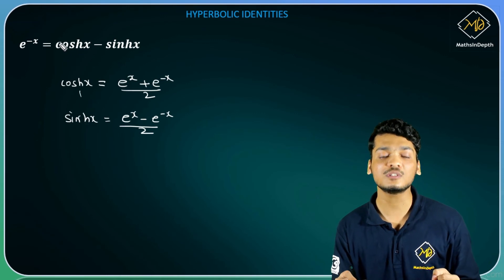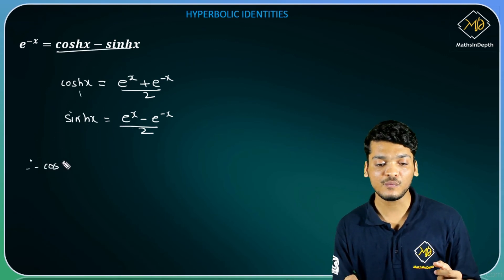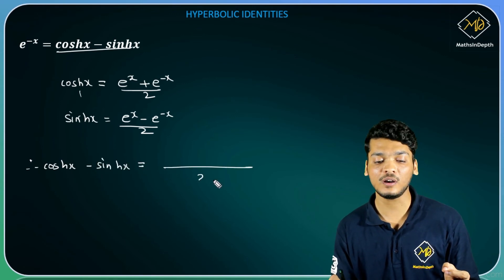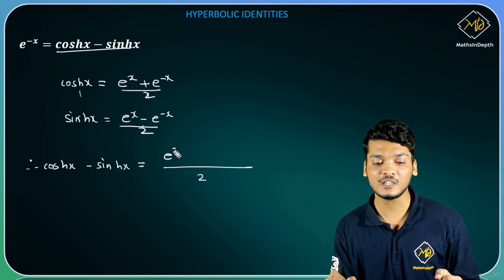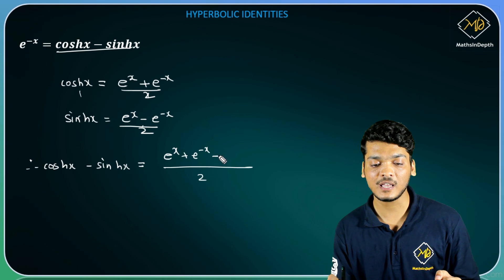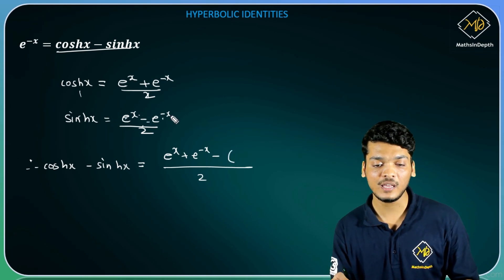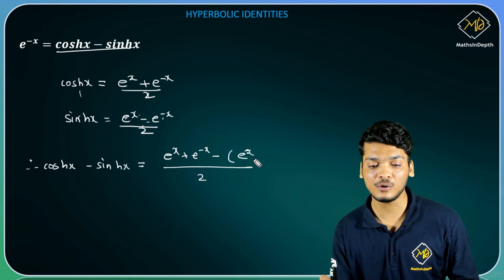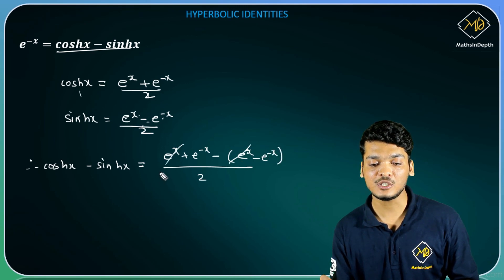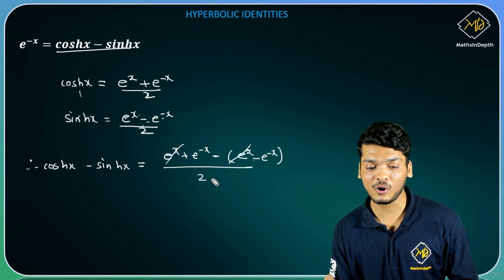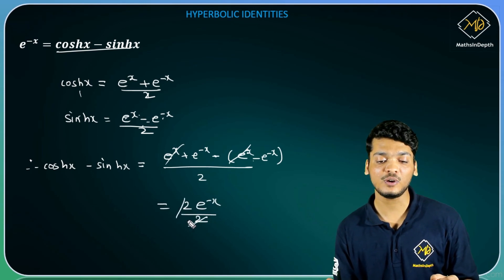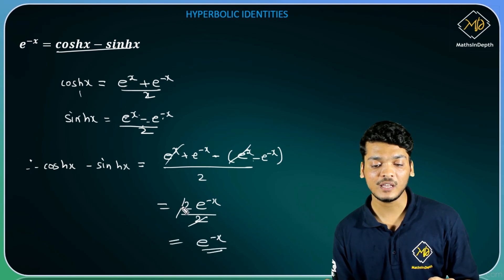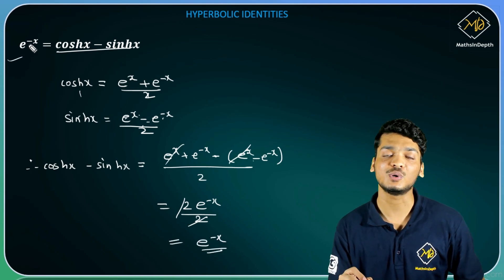Ab hum dono ko subtract karenge, kyunki yahan subtraction chahiye. So cosh(x) minus sinh(x) will be equal to: denominator mein 2 aayega, kyunki dono ka denominator same hai. Jab main (e raise to x plus e raise to minus x) se subtract karunga (e raise to x minus e raise to minus x) ko — e raise to x aur e raise to x cancel ho jayega, aur minus minus plus ho jayega. Then I will get twice of e raise to minus x divided by 2, so finally answer milta hai e raise to minus x, jo yahan mujhe show karna tha.